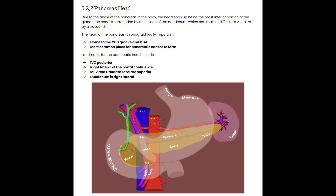Next up, we have the pancreas head. Due to the angle of the pancreas in the body, the head ends up being the most inferior portion of the gland. The head is going to be surrounded by the C-loop of the duodenum. A couple important things about the head of the pancreas: it is home to the common bile duct groove and the gastroduodenal artery, and it's also the most common place for pancreatic cancer to form.